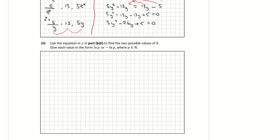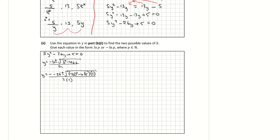Part 2: use the equation in y from part b1 to find the two possible values of k, giving answers in the form ln(p) or minus ln(p). The equation is 5y² minus 26y plus 5 equals 0. Using the quadratic formula: y equals minus b plus or minus the square root of b² minus 4ac, all over 2a. Here b is negative 26, a is 5, and c is 5, giving 26 plus or minus the square root of 676 minus 100, all over 10.